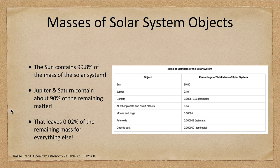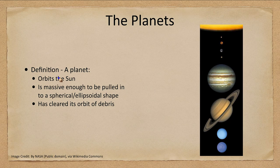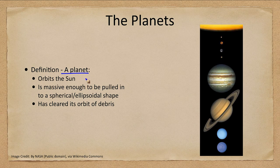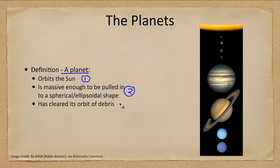So let's look at the planets first. So what is a planet? Well in 2006 we gave a definition as to what a planet actually is. And it has to do three things. First it has to orbit the sun. Second it has to be massive enough that it has pulled itself into a spherical or ellipsoidal shape. And three it has to have been able to clear its orbit of debris.